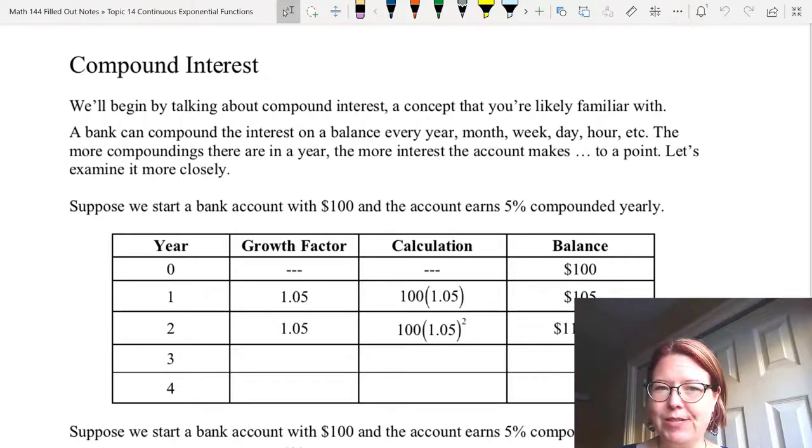A bank can compound interest in multiple ways. It can compound the interest annually, that's every year, monthly, weekly, daily, hourly, etc.